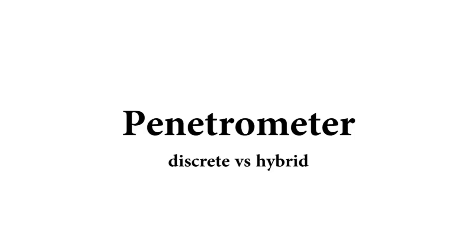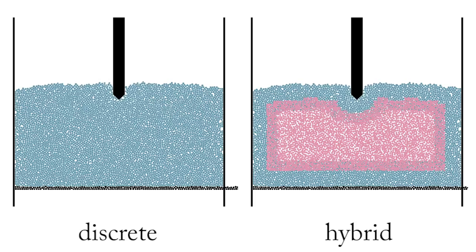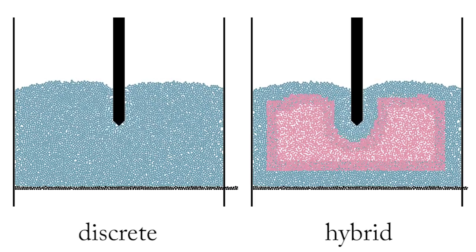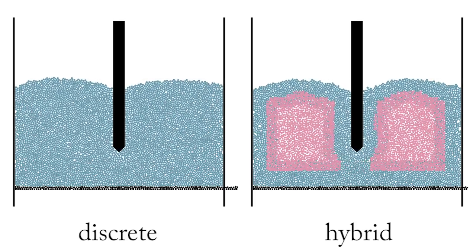A penetrometer enters a bed of grains, inducing a discrete region to form, eventually splitting the continuum region in two. Hybrid and discrete simulations show good agreement.